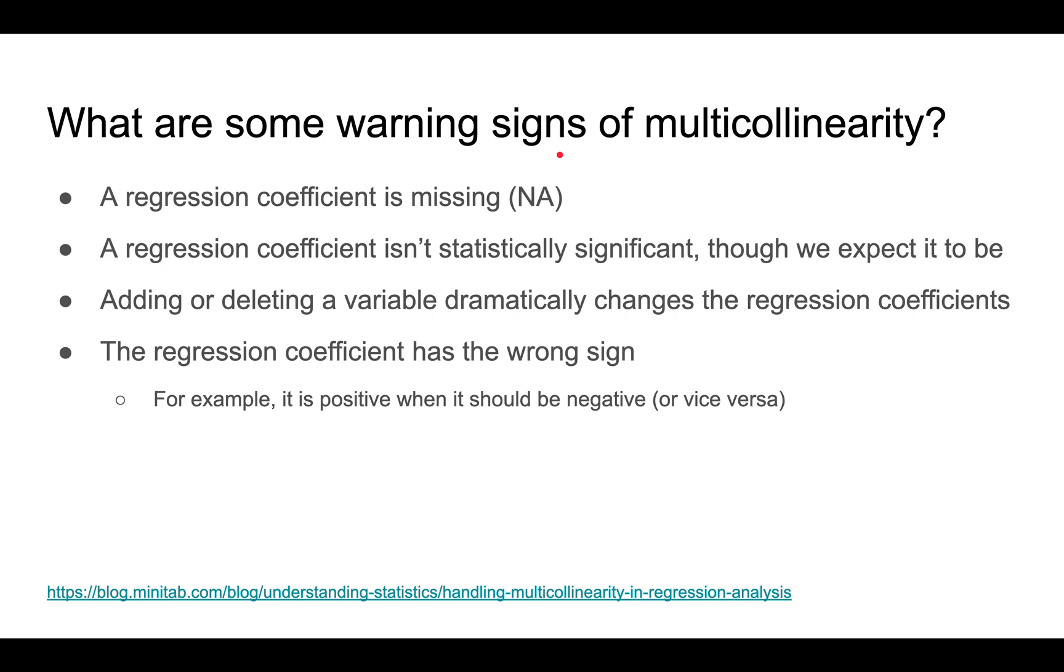What are some warning signs that there's multicollinearity in your data? You might get missing or NA regression coefficients. You might get coefficients that aren't statistically significant, even though you expect them to be, because the other variables weaken the effect.